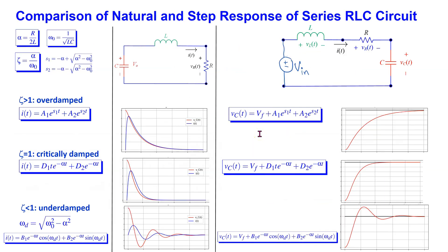It is quite instructive to compare the natural and the step response of a series RLC circuit. The definitions of the key parameters are the same. In the natural response there is no external source, and we are interested in how the variables approach their final zero value. In the step response there is an external source which determines the final voltage across the capacitor, and the response is determined by both the natural response parameters and the external source. Please pause the video now if you wish to reflect on this comparison before moving on.